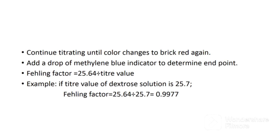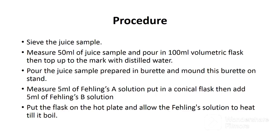To get the Fehling factor, you will take 25.64 divided by your average titer value. For example, if our titer value was 25.7, the Fehling factor will be 25.64 divided by 25.7, which equals 0.9977.